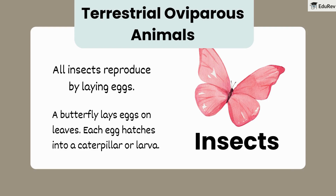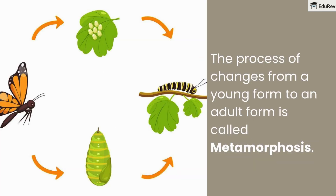Moving on to terrestrial oviparous animals, let's talk about insects. All insects reproduce by laying eggs. For example, a butterfly lays its eggs on leaves. When these eggs hatch, they turn into caterpillars or larvae. Insects go through an amazing process called metamorphosis — this is when they change from their young form to their adult form. For a butterfly, it goes from an egg to a caterpillar, then to a chrysalis, and finally emerges as an adult butterfly.